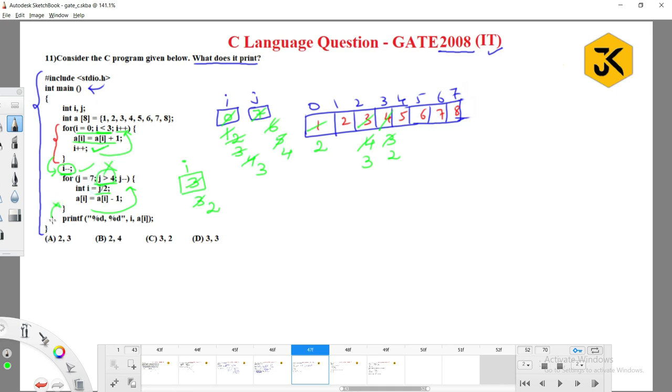And it will start printing the next line: printf with i comma a of i. Guys here try to check this i. This i is accessible to the top i because this i scope is clearly destroyed here itself. So what is the value of this i? This i is three.